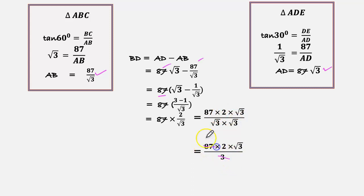3 and 87, we can cancel. We'll get 29. So 29 into 2 is 58. 58√3 meters. So this is the distance between B to D.